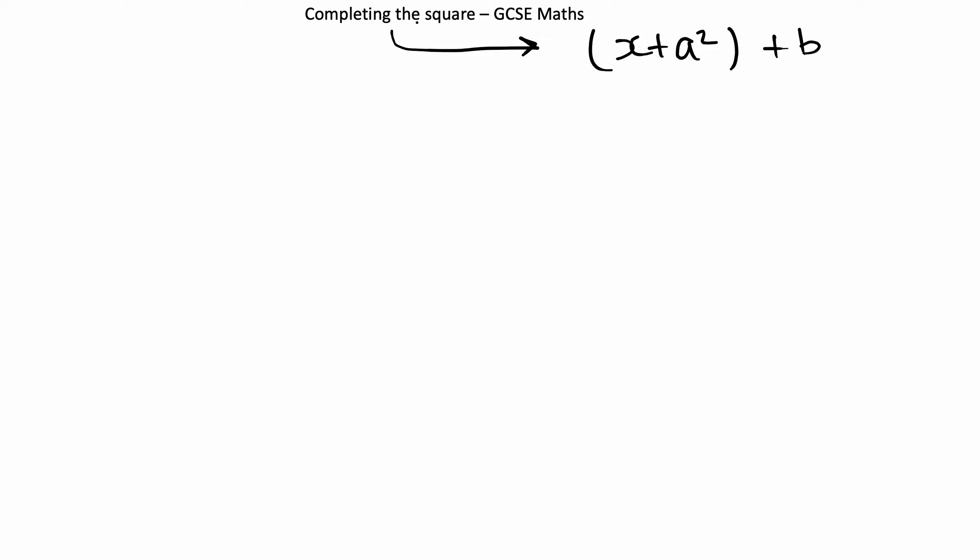Completing the square, something that you need to know for GCSE Maths. So completing the square is just basically a method of changing an expression, an equation, into the form x plus a squared plus b. Let's take a look at an example.